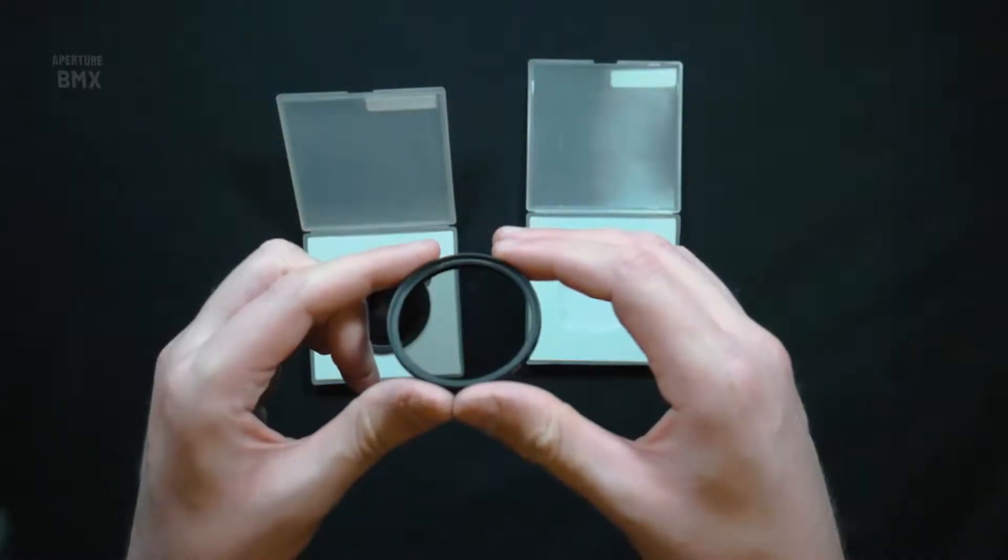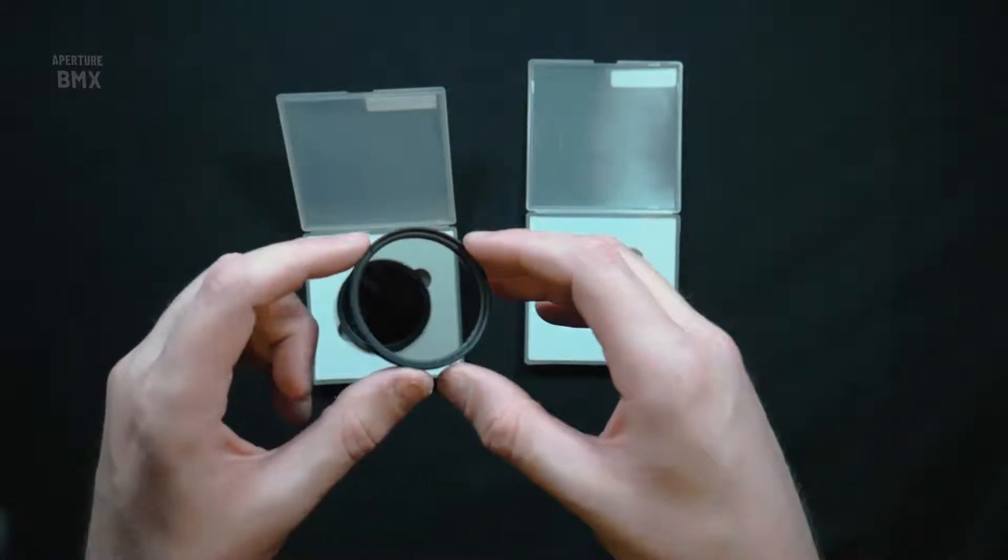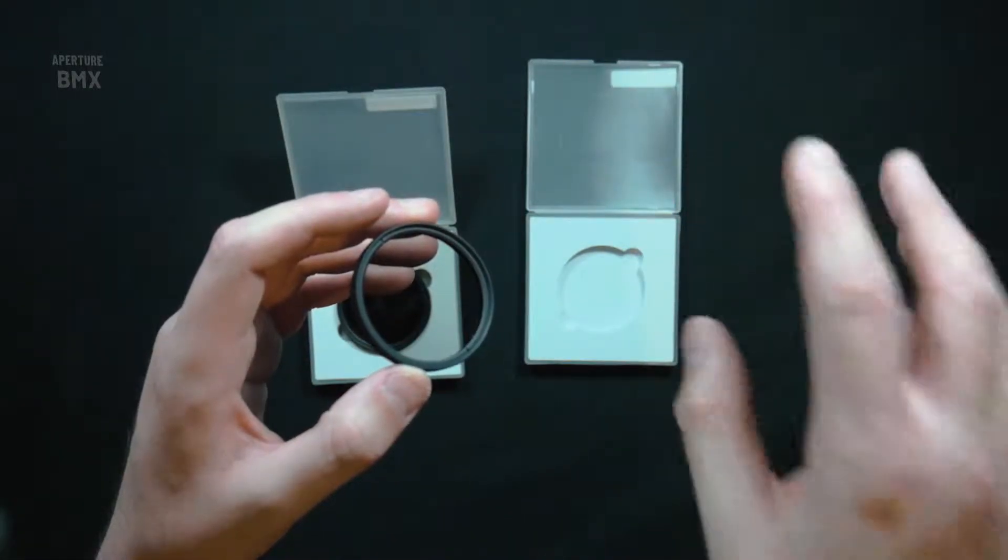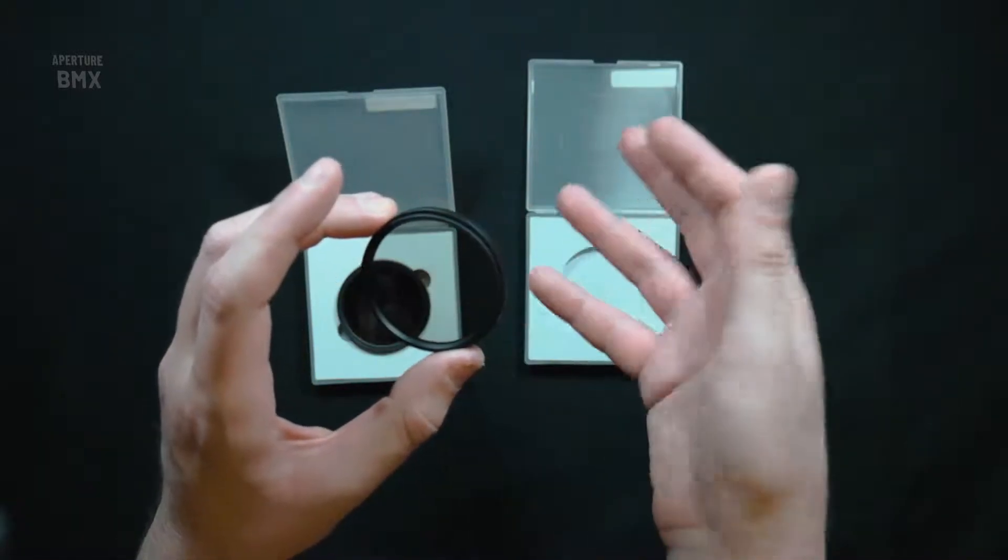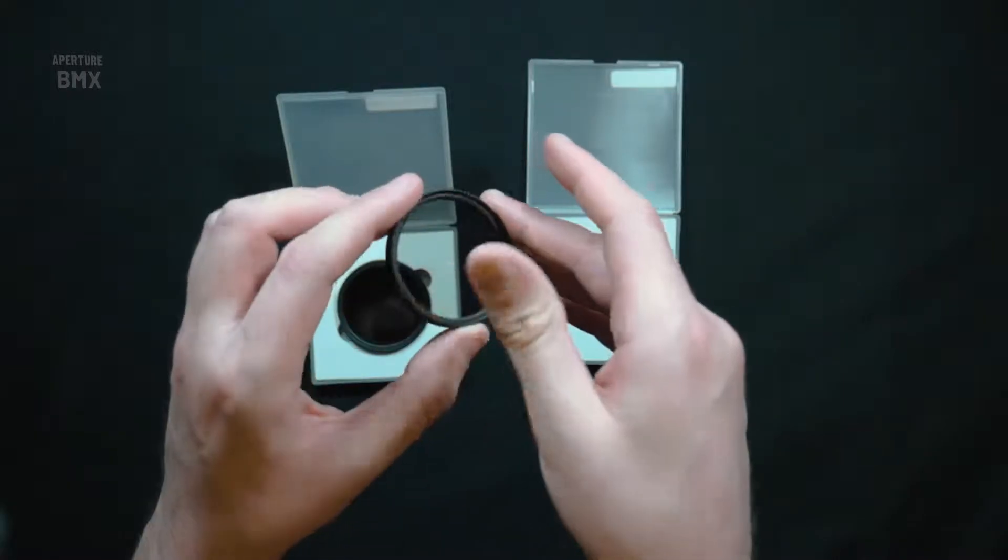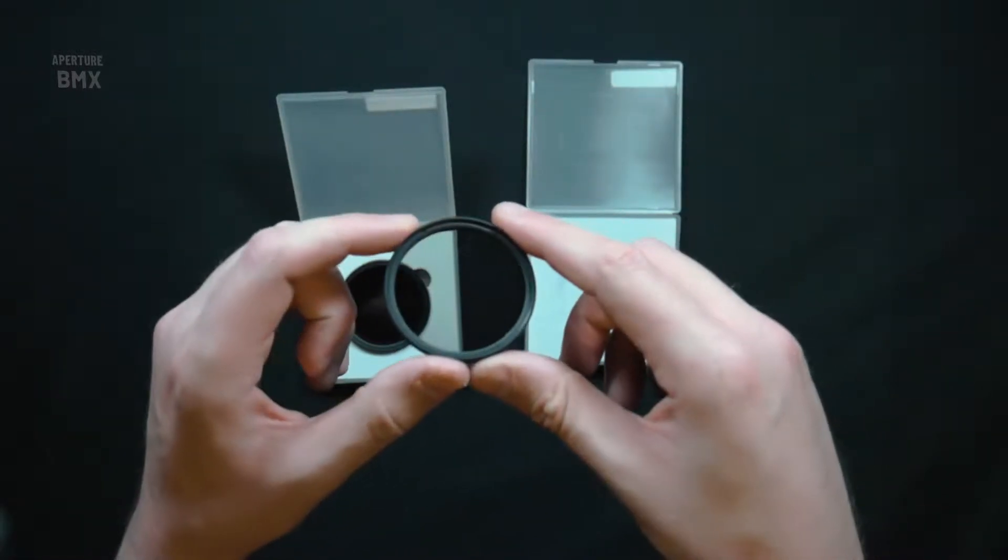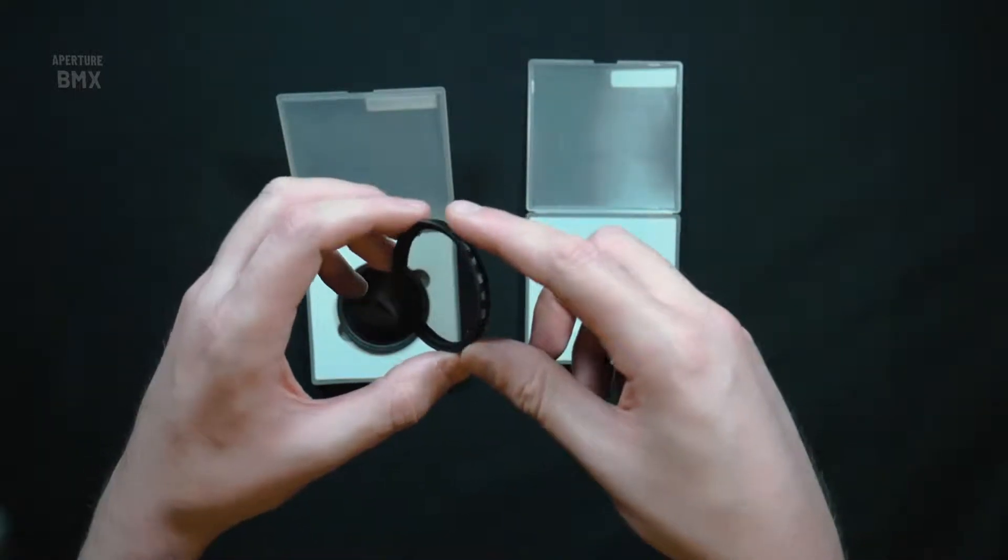The other filter is a CPL—a circular polarizing filter. This is basically used for getting rid of reflections. It doesn't get rid of all reflections, but it gets rid of a lot of them when you're filming into water or through a window. It also makes the colors look a little bit deeper as well. I use this every now and then when I need it for the shot I want.